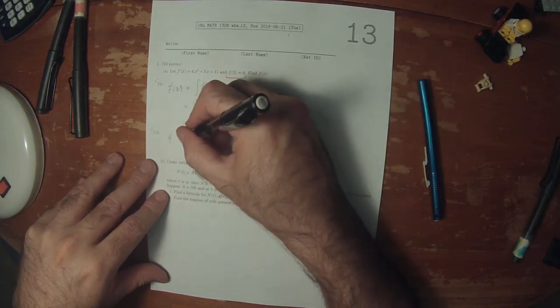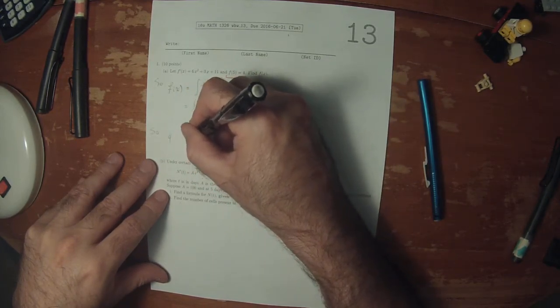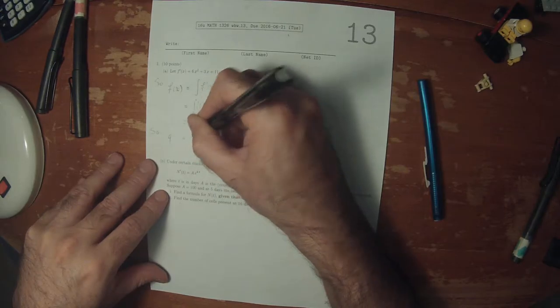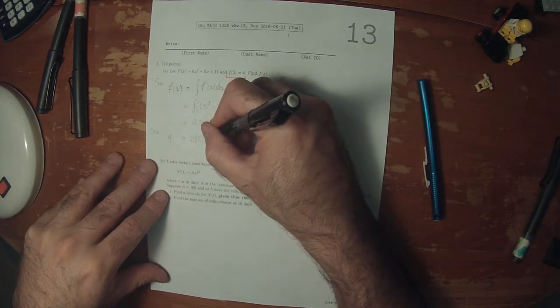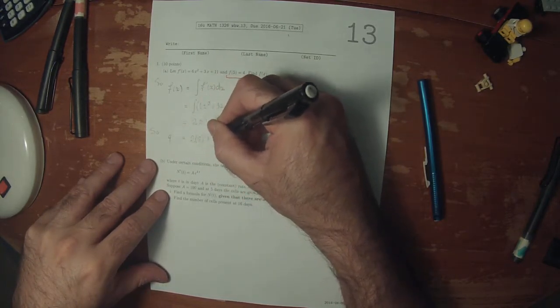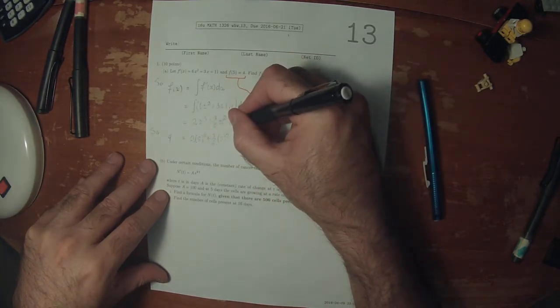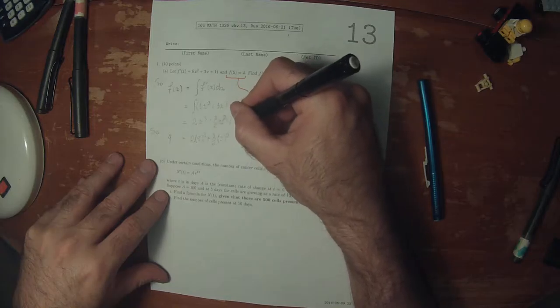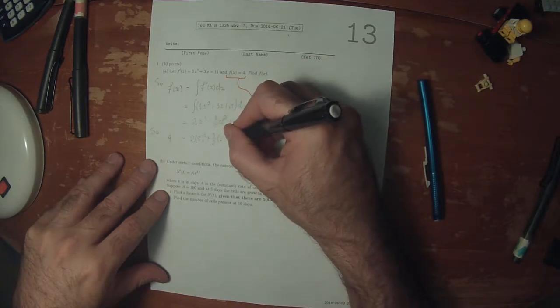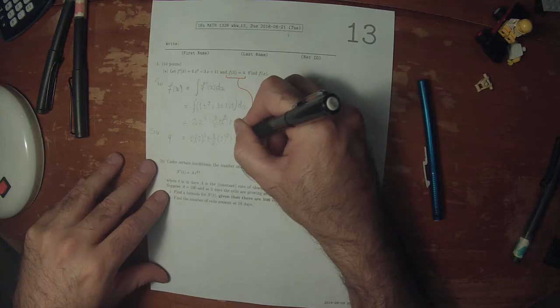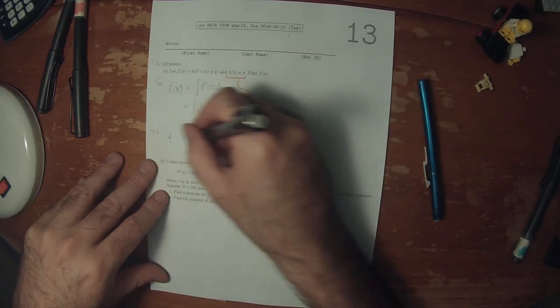So as a result, 2 multiplied by 5 cubed plus 3 halves multiplied by 5 squared plus 11, there was a missing x here, plus 11 times 5 plus a constant is supposed to be 4.